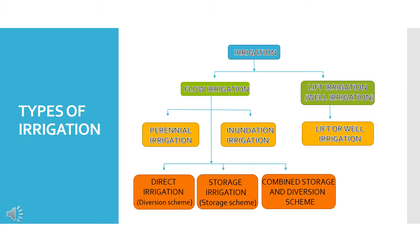Irrigation is basically classified into two types. First, Flow Irrigation. Second, Lift Irrigation, also called Well Irrigation.